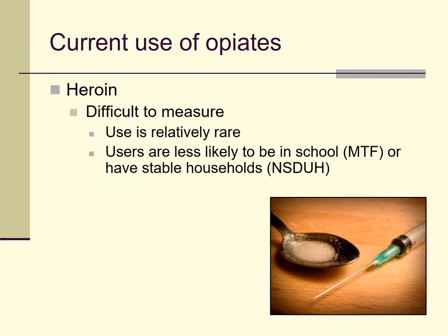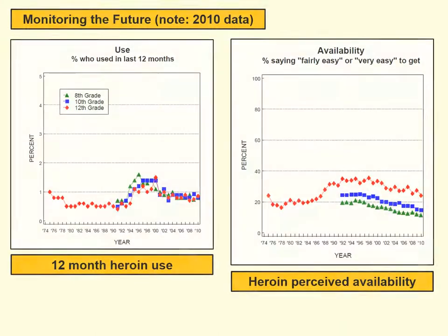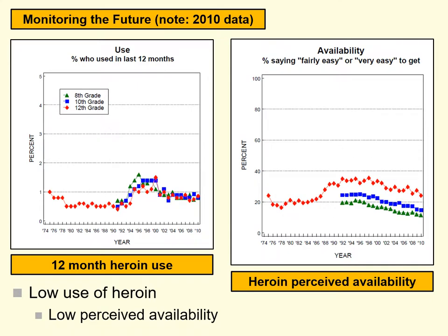With that in mind, let's look at some of our regular data sources. Here we have Monitoring the Future from 2010 — that's about as recently as Monitoring the Future tracked heroin use; it doesn't look like they do anymore. Among 8th, 10th, and 12th graders, there's a relatively low use of heroin — less than 1% of students — and fairly low perceived availability. About 30% or less of high school seniors say heroin is fairly easy or very easy to get.